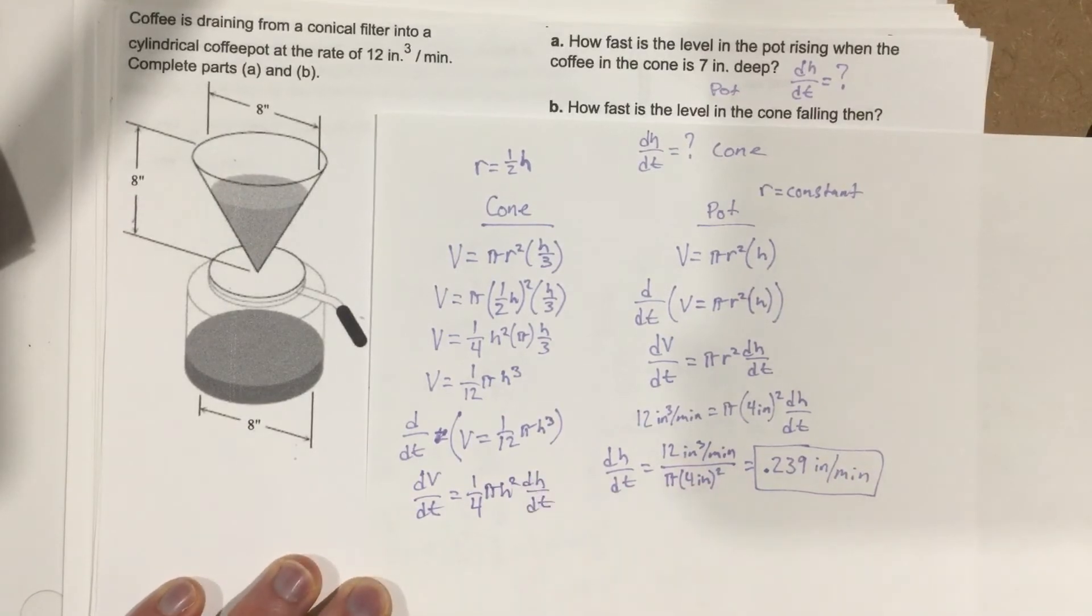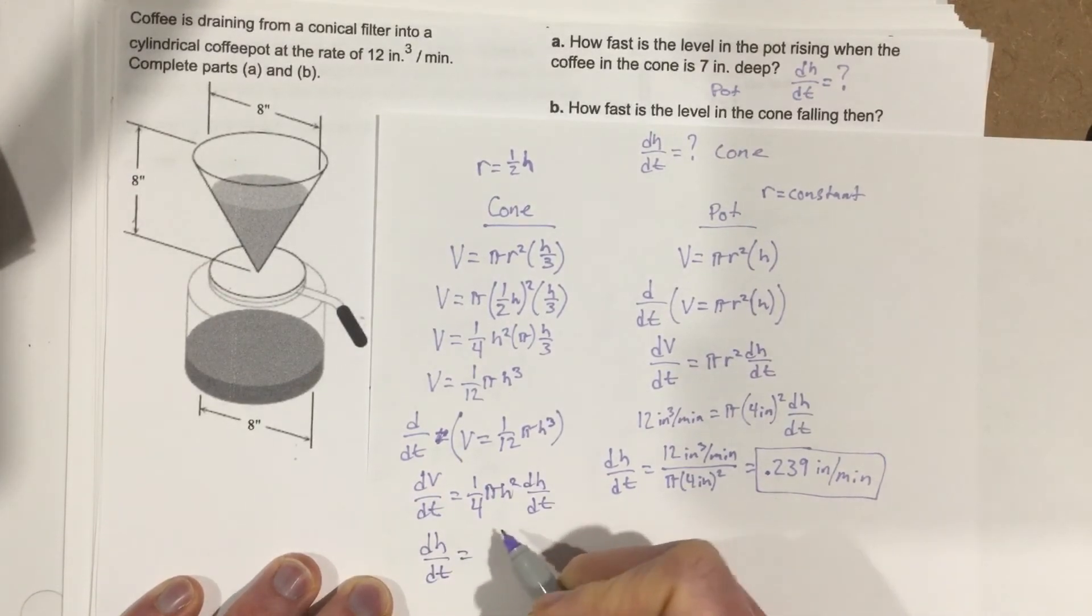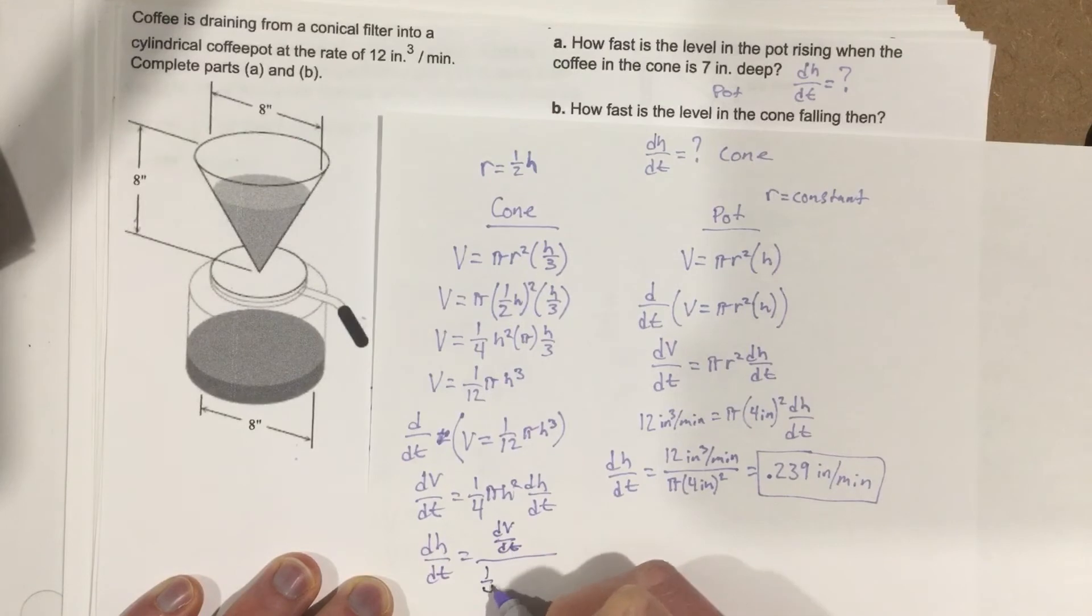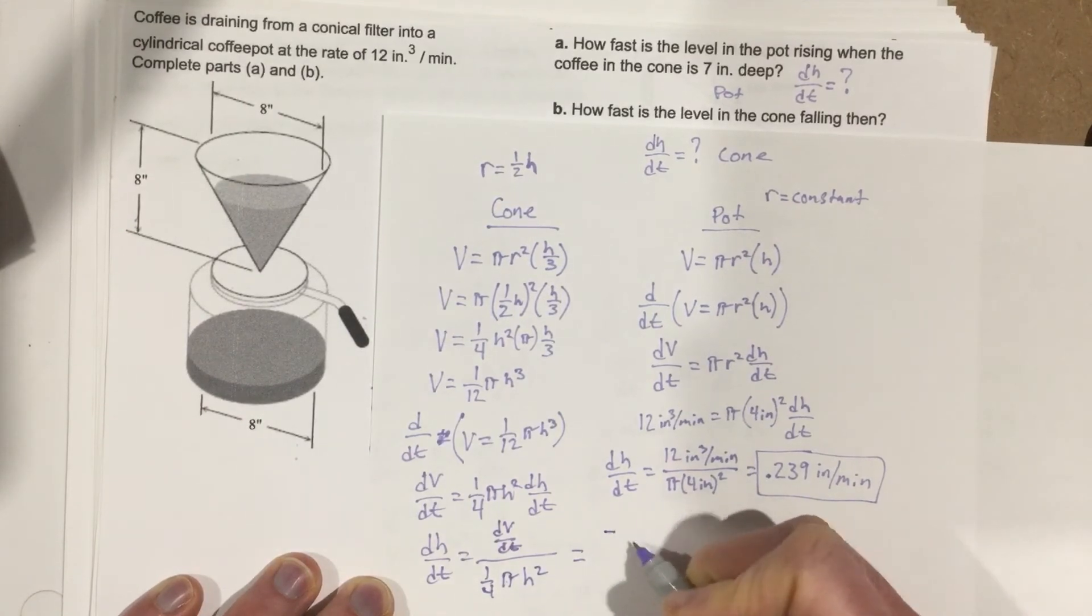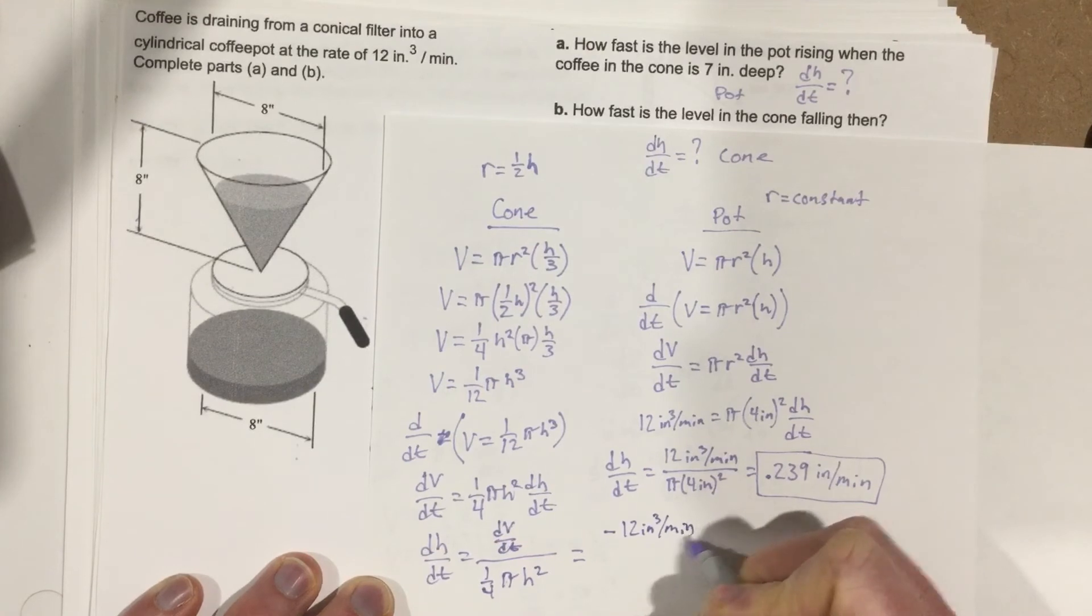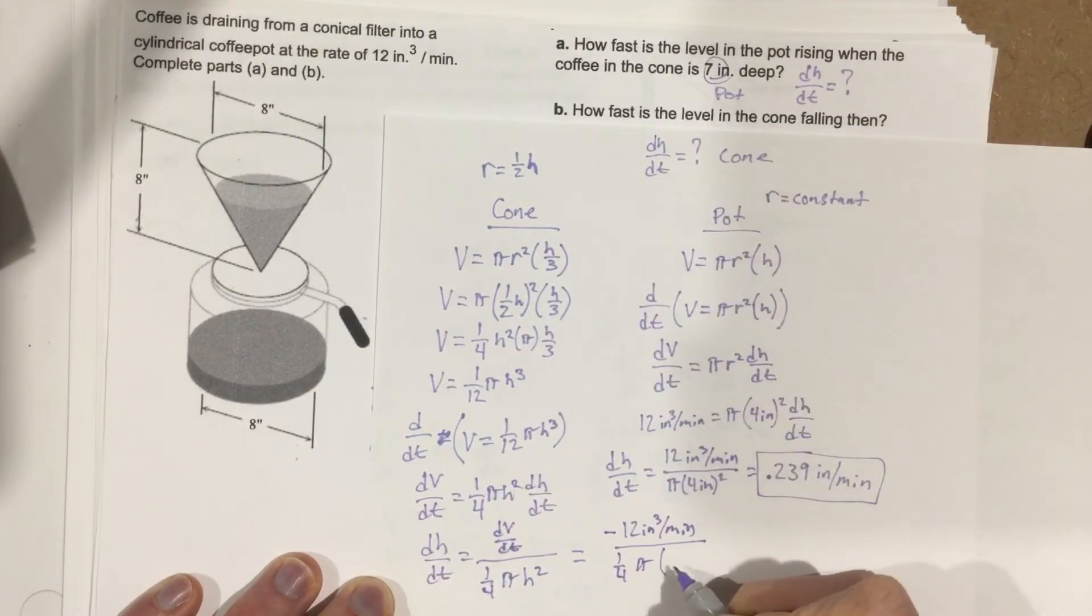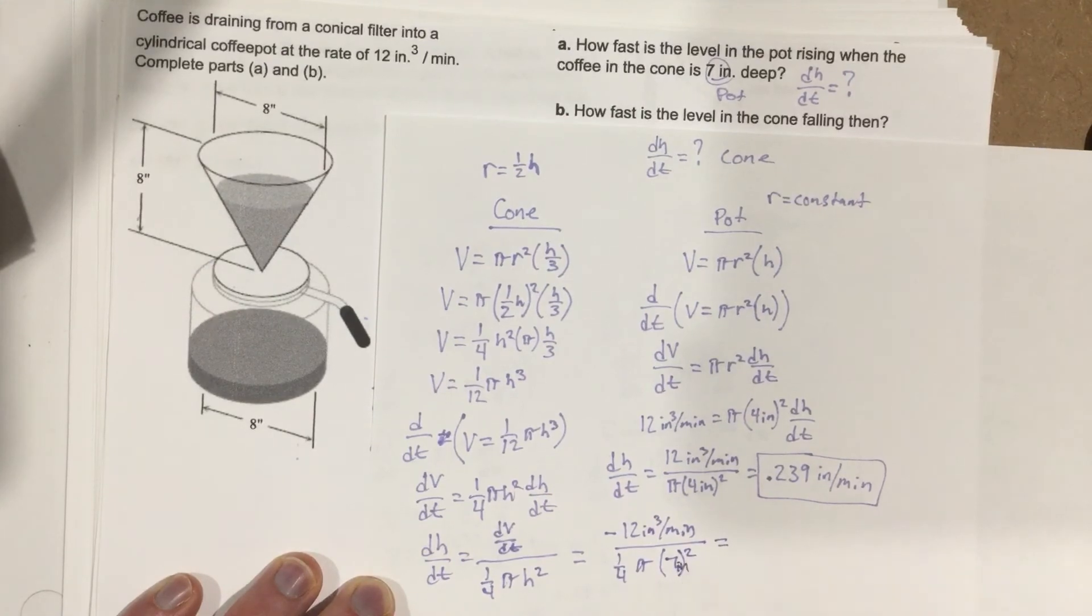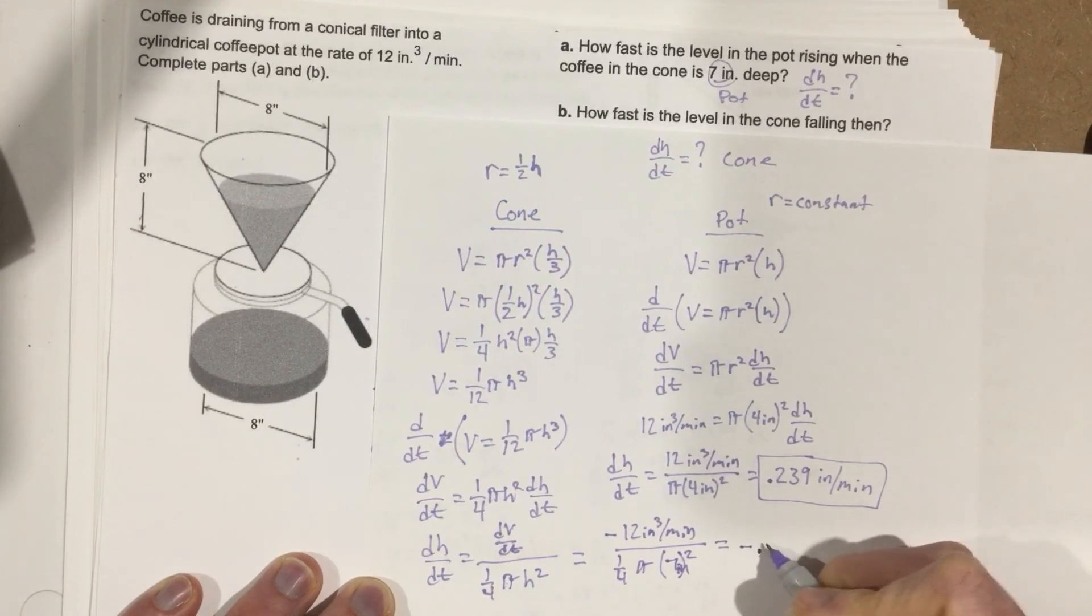Solving for dh/dt, we have dh/dt = dV/dt / [(π/4)h²]. So dV/dt is negative 12 inches cubed per minute divided by (π/4)(7²). In our problem we had h to be 7, so we're using 7 inches squared here.